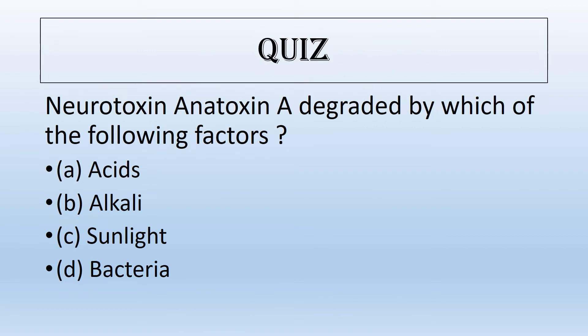Before we start, there is a single-question quiz. The neurotoxin Anatoxin A is degraded by each of the following factors — Anatoxin A is a toxin produced by cyanobacteria, and you have to answer among the four options given. If you know the answer, you can write it in the comment section, or if you don't know, I will give the answer at the end of the video.